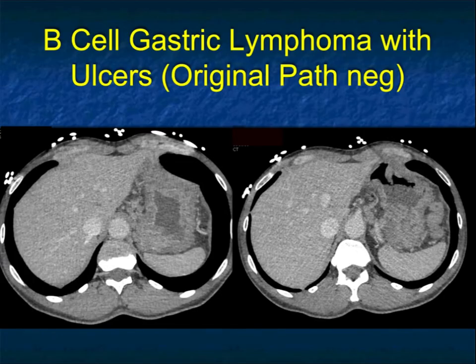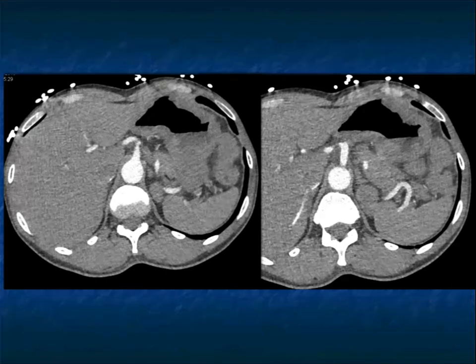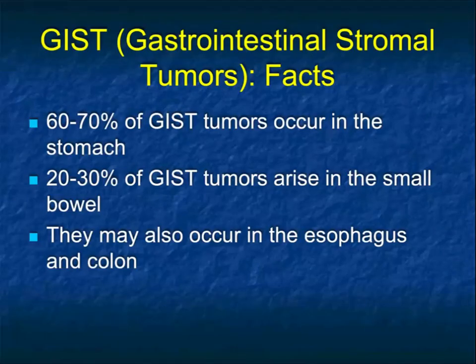On the other hand, this case has bulkier tumor infiltration with lots of nodes. You could consider adenocarcinoma, but lymphoma is a good possibility. We think about ulcers as being something with adenocarcinoma, but you can see ulcerations with lymphoma as well as with GIST tumors. The bulky tumor infiltration should at least make you think about that possibility.